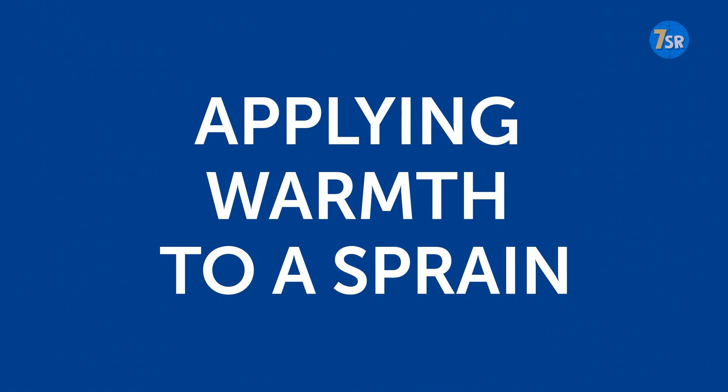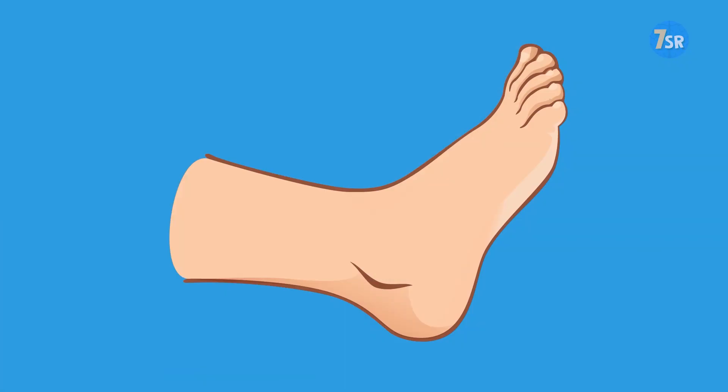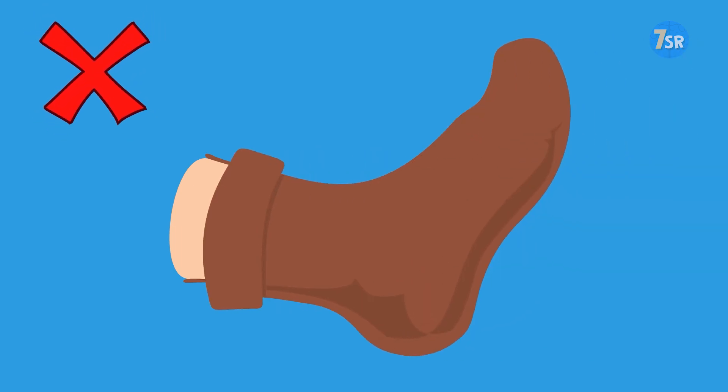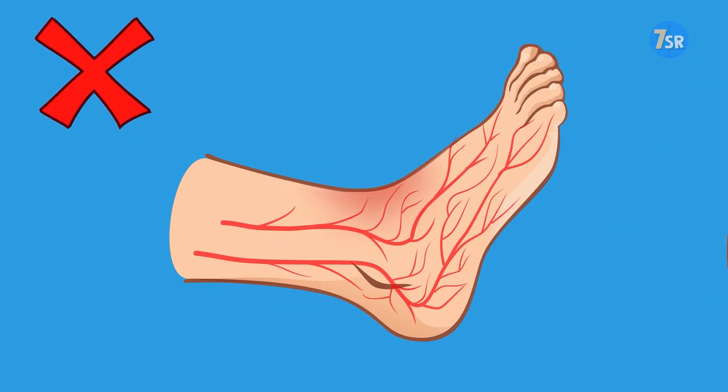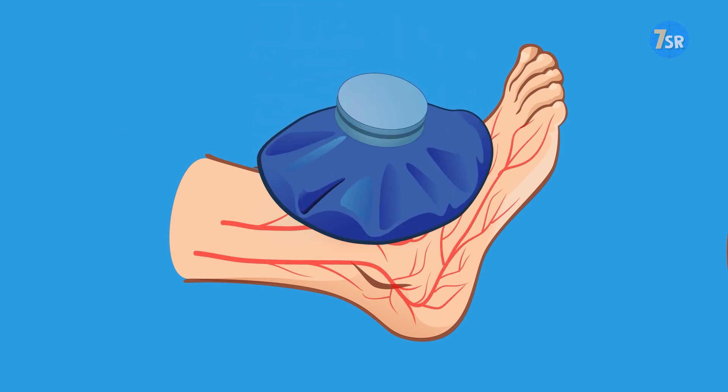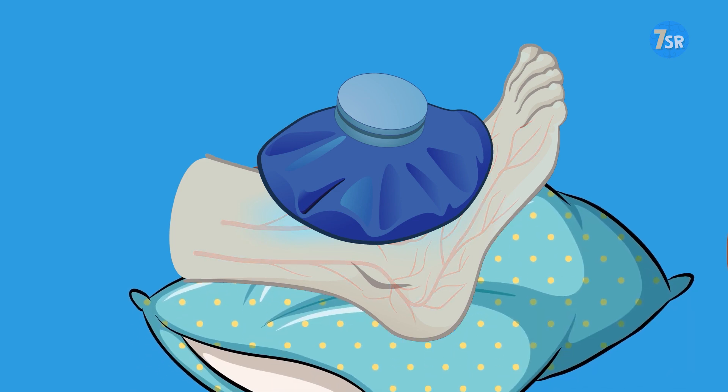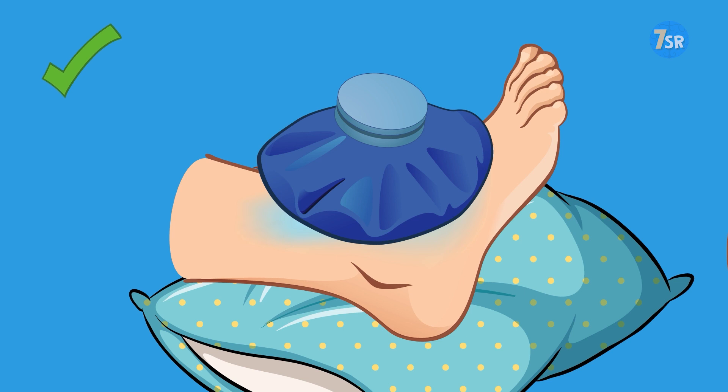Applying warmth to a sprain. When your muscles are sprained, a warm cloth won't help. On the contrary, heat will strengthen the blood flow, leading to a more severe swelling. In the first days after the injury, apply cold. It will lessen the inflammation and kill the pain. Try to use the sprained limb as little as possible for at least the first 48 hours.